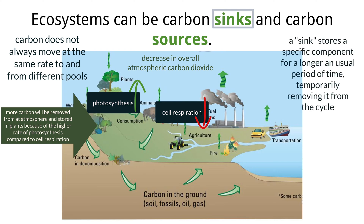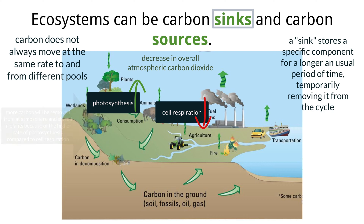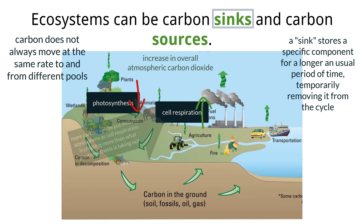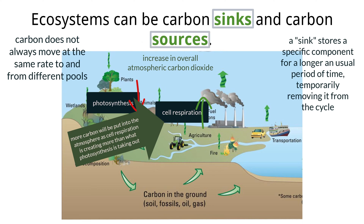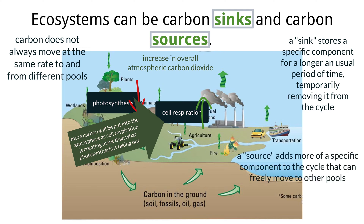On the other hand, if carbon dioxide from cell respiration is greater than the total amount taken in by photosynthesis, this leads to an increase in atmospheric carbon dioxide. This results in the organisms undergoing cell respiration being called a carbon source, because once carbon is in the atmosphere it is readily available to enter multiple other pools. Based on the situation in the environment at a given time, different pools and groups can be treated as either sinks or sources.